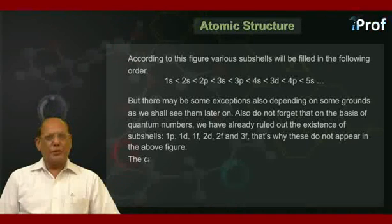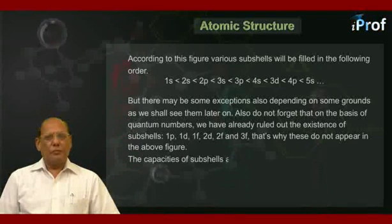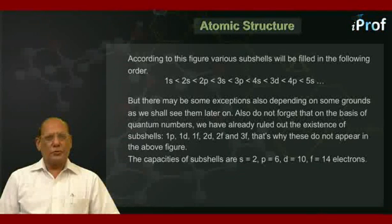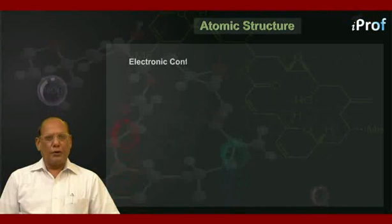The capacities of subshells are s equal to 2, p equal to 6, d equal to 10, and f equal to 14 electrons. So let us now start drawing electronic configurations.